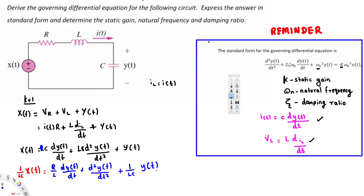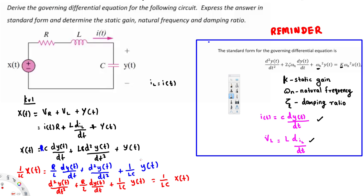Writing this in decreasing order: the second-order term first, then the first-order term, then the zero-order term. The standard form becomes: d²Y(t)/dt² + (R/L) · dY(t)/dt + (1/LC) · Y(t) = (1/LC) · X(t). This is our standard form of the governing differential equation for this circuit.